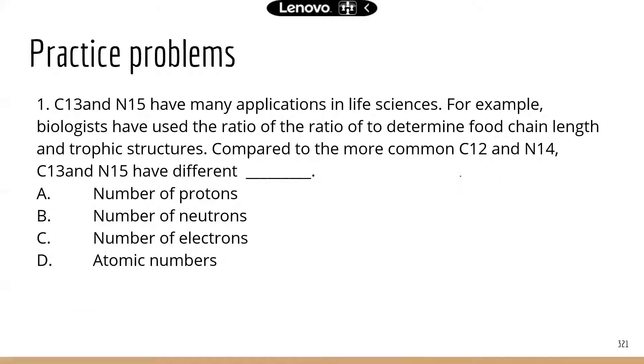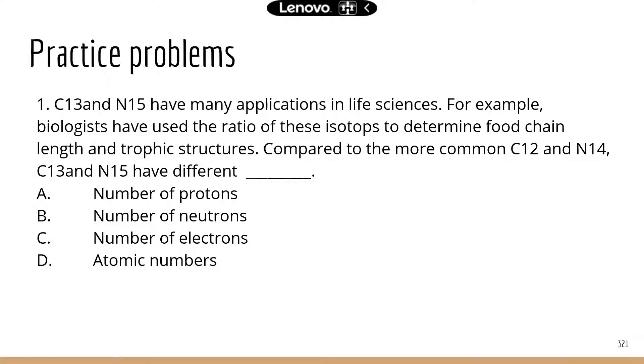Now that's one type of question. The questions that I came up with are a little bit different. First question, carbon-13 and nitrogen-15 have many applications in life sciences. For example, biologists have used the ratio of these isotopes to determine food chain length and trophic structures. Compared to the more common carbon-12 and nitrogen-14, carbon-13 and nitrogen-15 have different. Now, even though there might be some terms you don't recognize in this question, you might not know what trophic structures are, but you can probably guess that this question is about different elements and specifically the different forms of the same element.